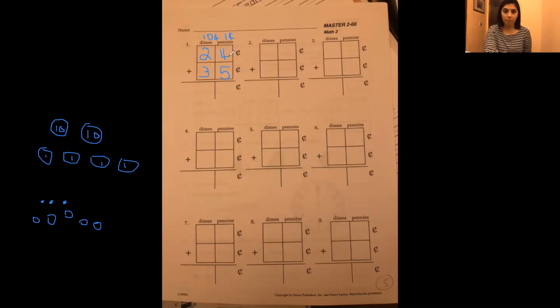What is four plus five? Nine. Good job. What is two plus three? Five. Perfect. So, our answer is 59 cents. Don't forget to put that. It's already there for you. So, now the second problem.